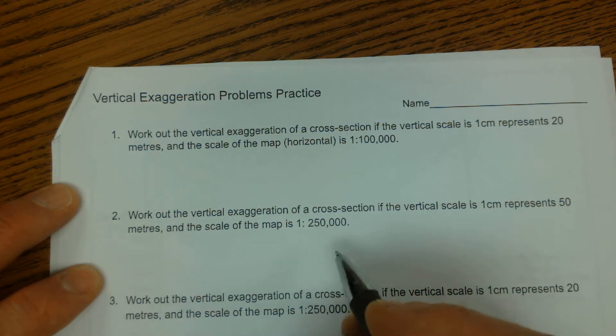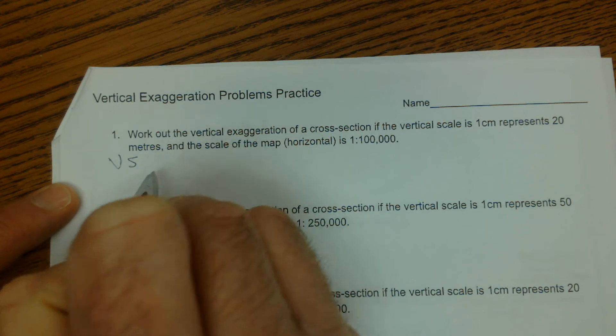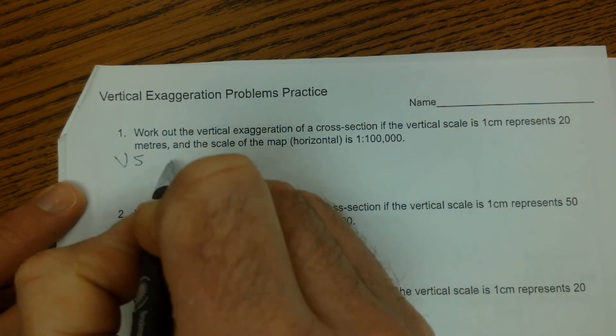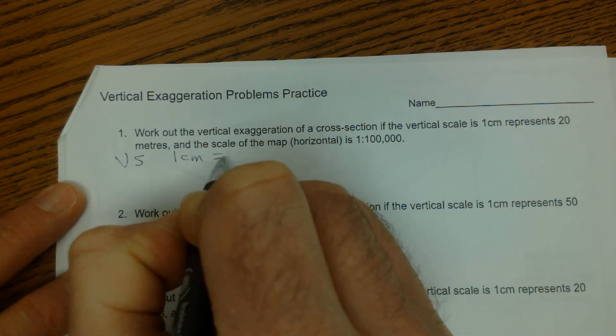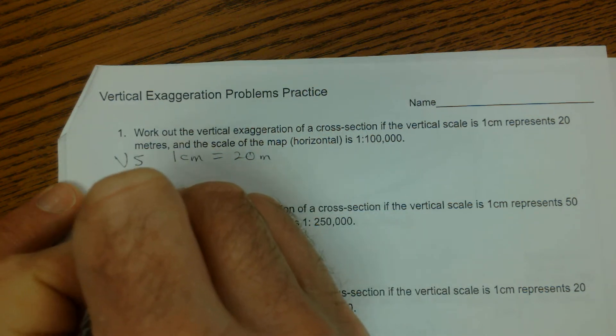Okay, so let's just start out with our vertical scale. The vertical scale is 1 centimeter represents 20 meters.